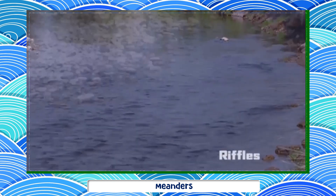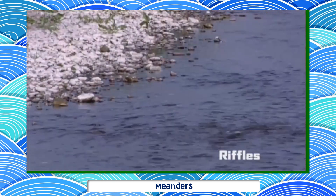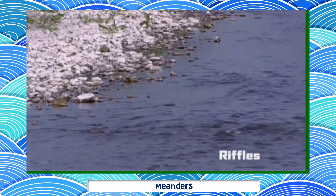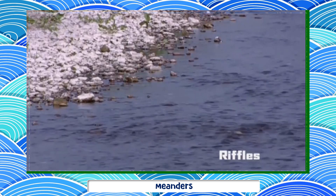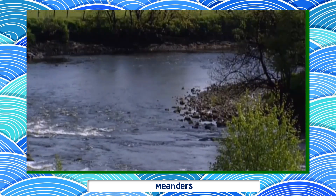Riffles are the shallower sections of rivers where rocks often break the surface and slow down the flow of the water.